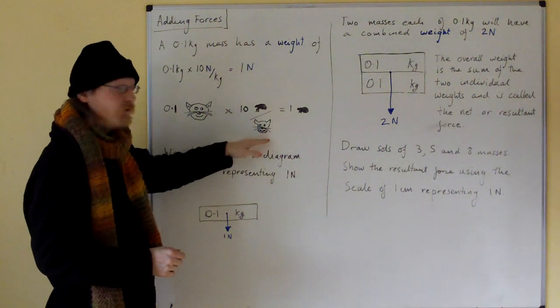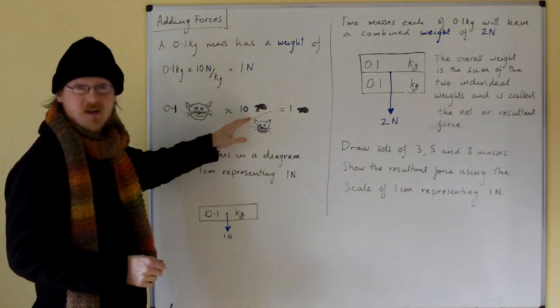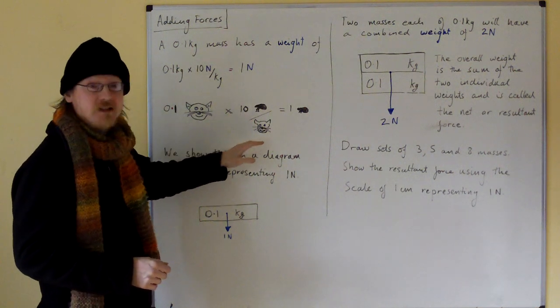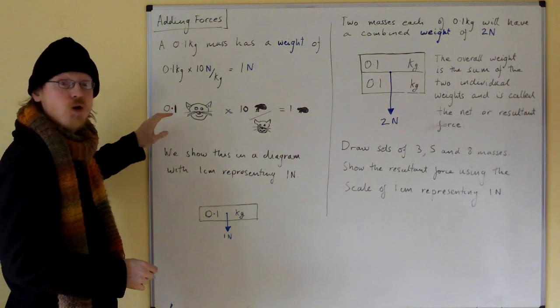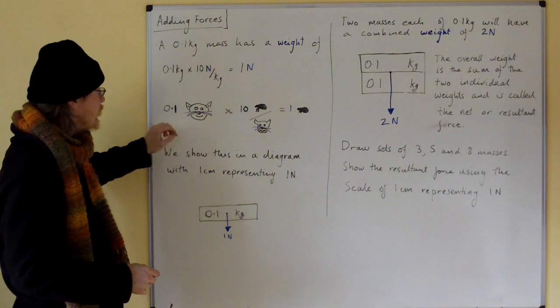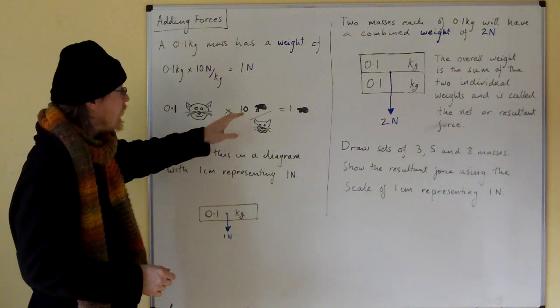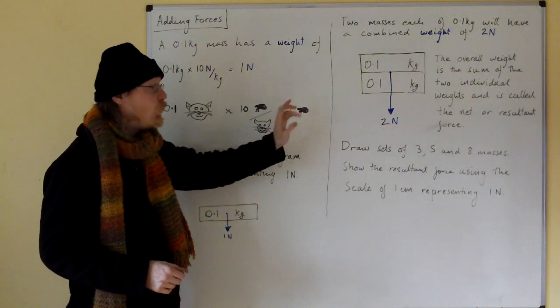Let's put it a different way. Suppose every cat has got 10 fleas. So there are 10 fleas on every cat, and we've got one-tenth, 0.1 of a cat. So we times 0.1 cats by 10 fleas for every cat, that gives us one flea.